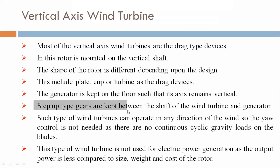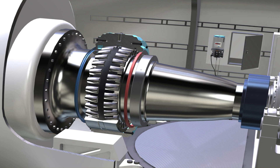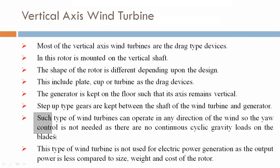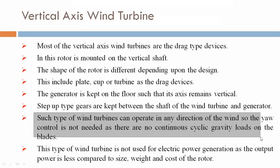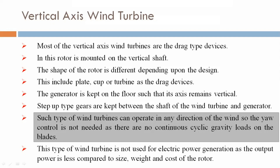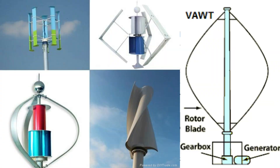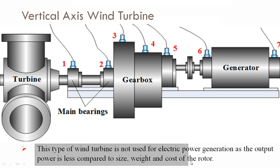Step-up type gears are kept between the shaft of the wind turbine and generator. Such type of wind turbines can operate in any direction of the wind, so yaw control is not needed, as there are no continuous cyclic gravity loads on the blades. This type of wind turbine is not used for electric power generation as the output power is less.